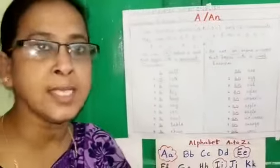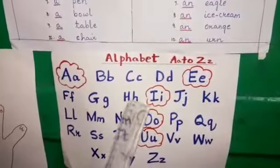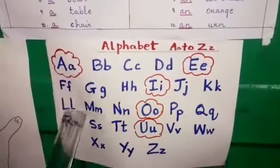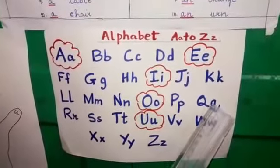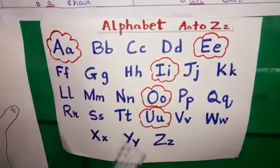As you know children, there are 26 alphabets. They are A, B, C, D, E, F, G, H, I, J, K, L, M, N, O, P, Q, R, S, T, U, V, W, X, Y, Z.